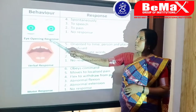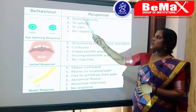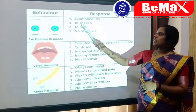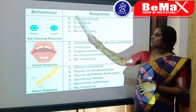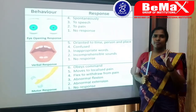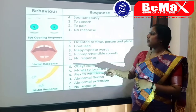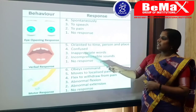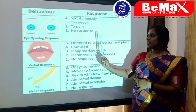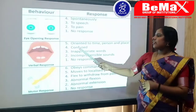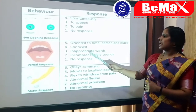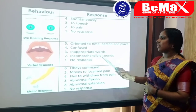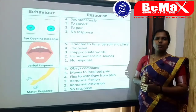For eye response, the total is 4 marks: spontaneous eye opening scores 4, responds to speech scores 3, responds to painful stimuli scores 2, and no response scores 1. For verbal response: oriented to person, place, and time scores 5; confused scores 4; inappropriate words scores 3; incomprehensible sounds scores 2; no response scores 1.